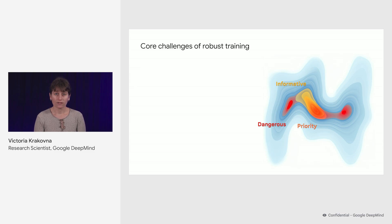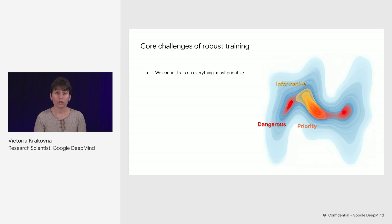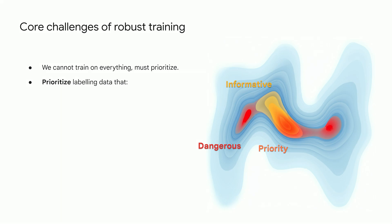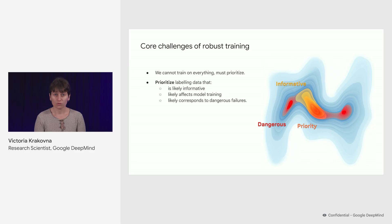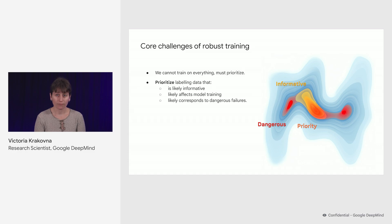Robust training has a different flavor of prioritization required, because the space is much, much larger — it's not just the space of all things that happened, but the space of all things that could happen. So we need to prioritize labeling data or gathering oversight from the amplified oversight approaches. We focus on labeling data that's likely informative, that would likely affect model training, and that corresponds to dangerous and important failures. We imagine this giant space containing some dangerous inputs or outputs likely to lead to dangerous things, and some inputs likely to produce informative events valuable for training, and we're trying to prioritize the intersection of those.